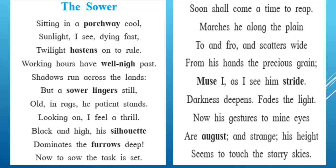'Shadows run across the lands' — what is the meaning of this? It is something personified. Shadows cannot run, but the way the farmer was performing his activities — moving to and fro — has been compared here. The shadows running fast suggests that in a rush the farmer was performing his activity. Before complete darkness arose, the farmer was willing to finish his duties, running and doing his work in haste.